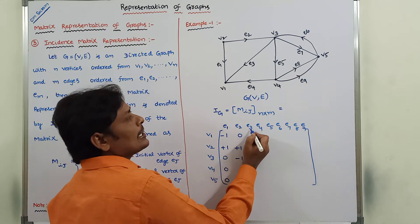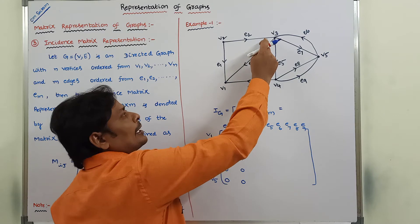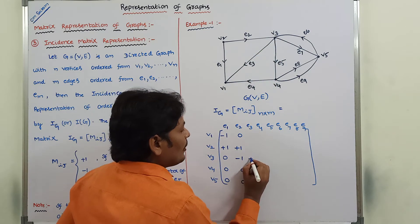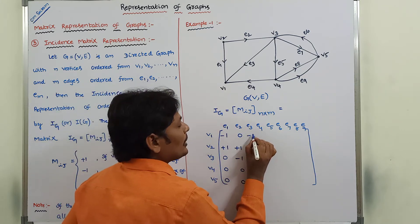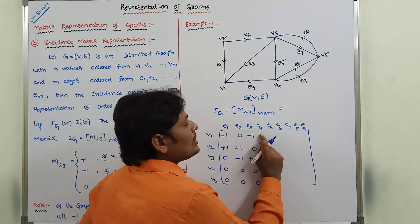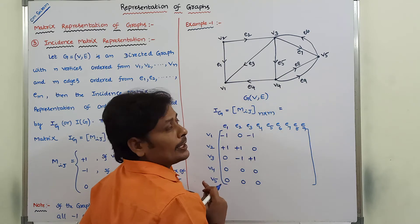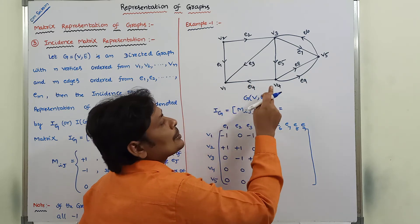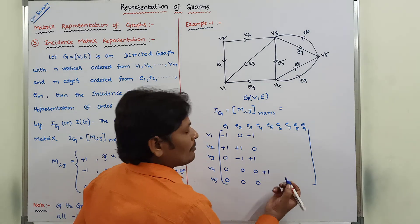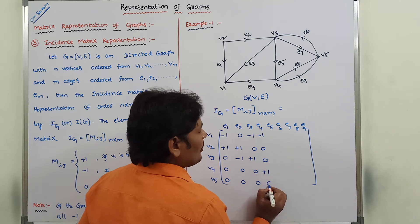Consider column 3, which is edge E3. E3 is incident on V3 and V1. Edge E3 starts from vertex V3 and ends with vertex V1. So at vertex V3 we put plus 1, at ending vertex V1 we put minus 1, and at remaining places we put 0. For edge E4 in column 4: E4 is incident on V1 and V4. The edge E4 goes from V4 to V1, so starting vertex V4 gets plus 1, ending vertex V1 gets minus 1, and remaining places get 0.